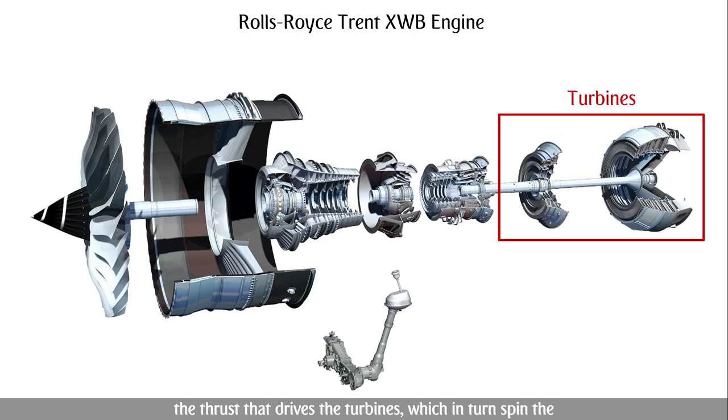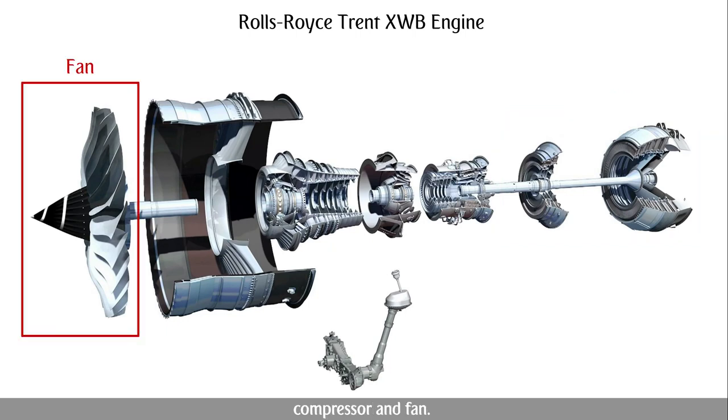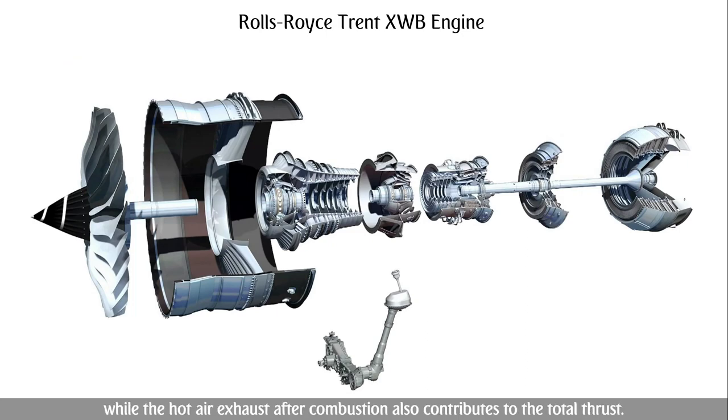The hot gas exhaust from the resulting combustion provides the thrust that drives the turbines, which in turn spin the compressor and fan. The majority of thrust that propels the aircraft is produced by the fan, while the hot air exhaust after combustion also contributes to the total thrust.